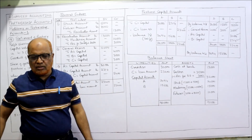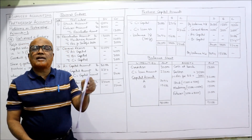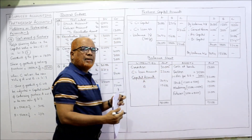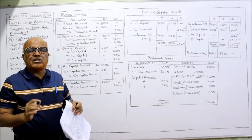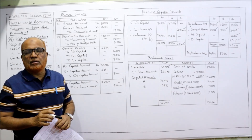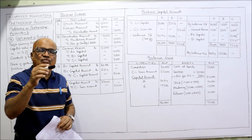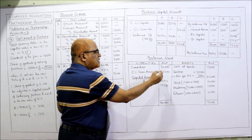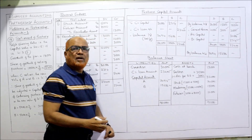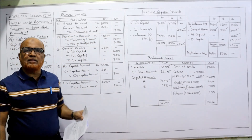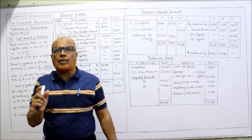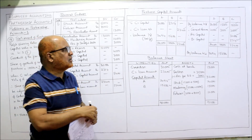Now we make the balance sheet. On the liability side, creditors remain at 30,000 — no change. General reserve does not appear since it was distributed. A new liability appears: C's loan account 23,400. Capital accounts: A = 20,914, B = 15,686. On the asset side, cash at bank remains 13,000 — no cash transactions occurred. Debtors: 35,000 minus reserve for doubtful debts 3,000 = 32,000.